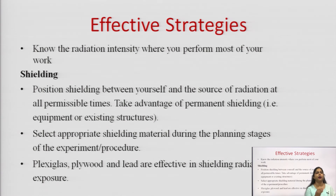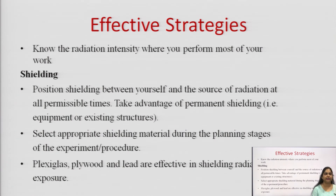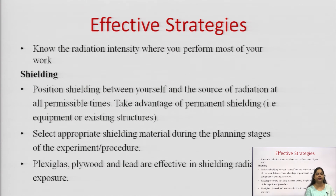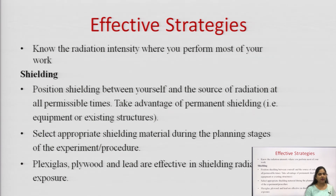There are permanent shielding options using equipment or existing structures. For example, if a radioactive compound emits gamma rays, we can use a thick concrete wall to divide the area — the thick concrete wall will block the radiation and prevent it from passing through, so a person working in that area will not be exposed to that radiation.